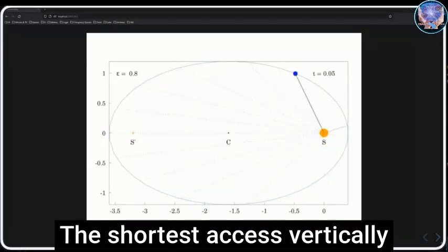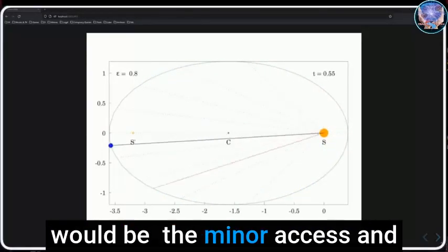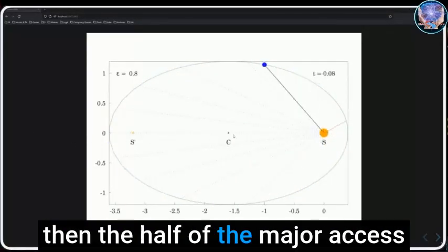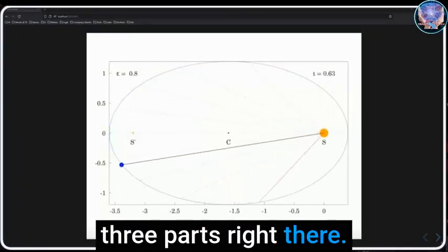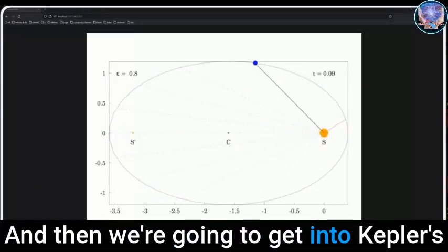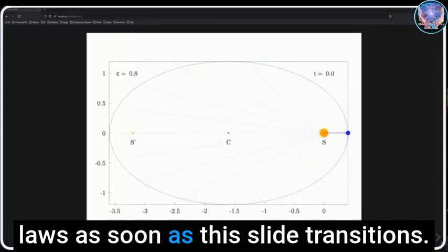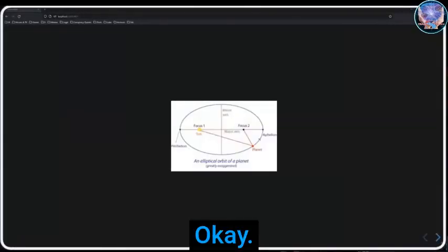The shortest axis vertically would be the minor axis, and then half of the major axis would be the semi-major axis. So you can break it up into three parts. We're going to get into Kepler's laws as soon as this slide transitions.